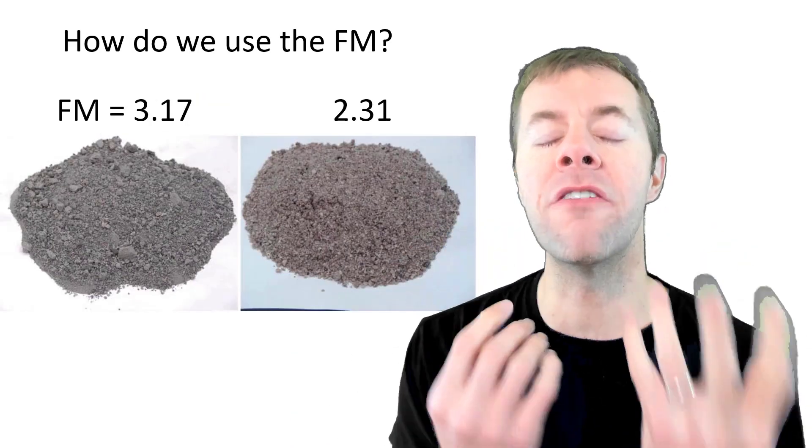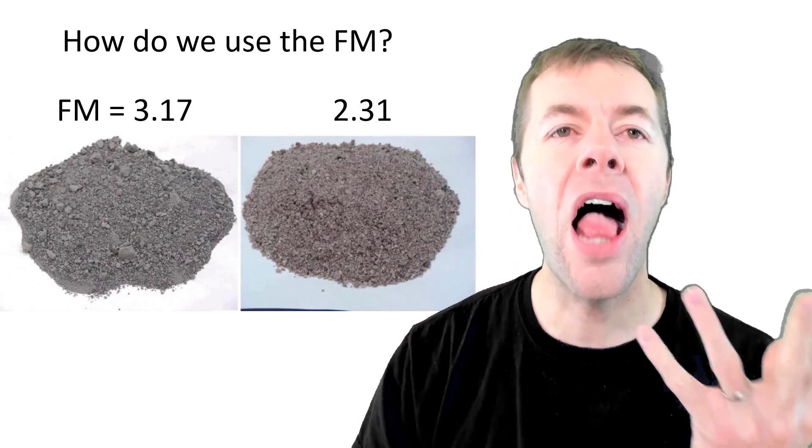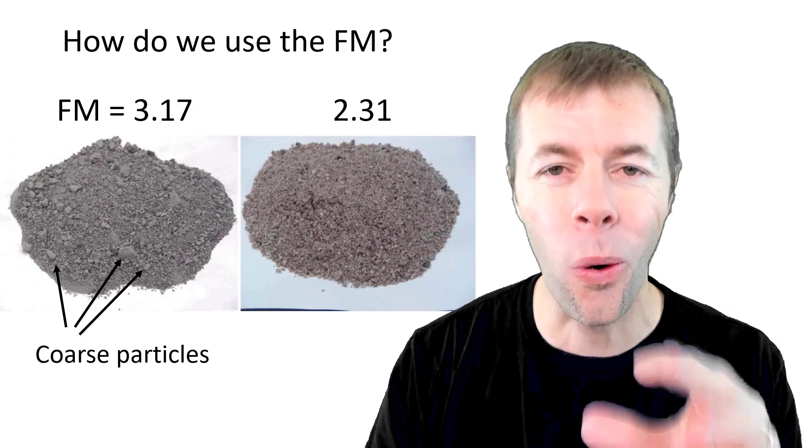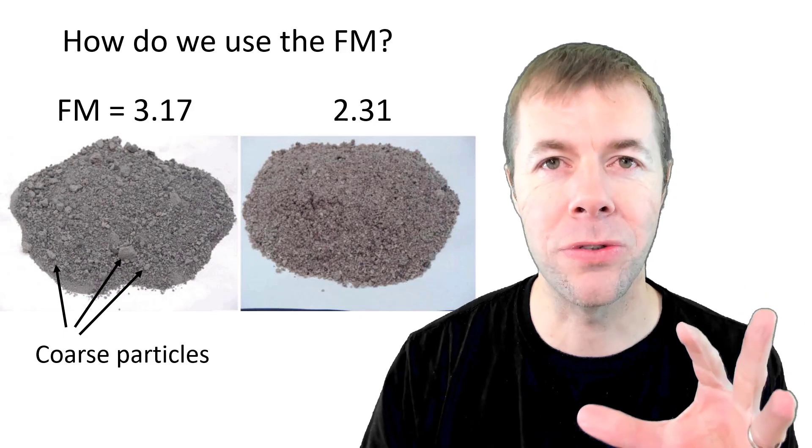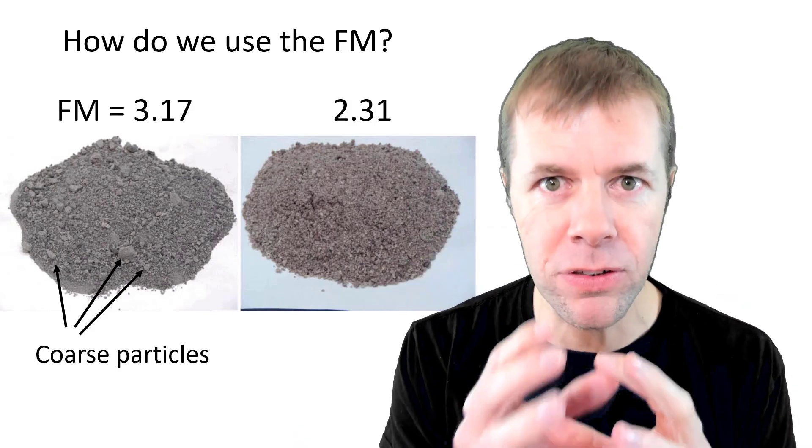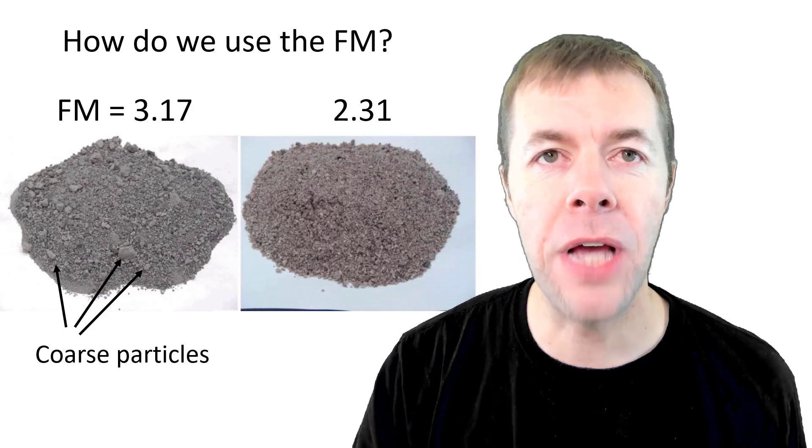For example, here are two pictures, one with a fineness modulus of 3.17 and one at 2.31. The one at 3.17 has the coarser or larger particles inside of it. Pretty cool that one number can give you some idea about the differences in size distribution between these two piles of sand.